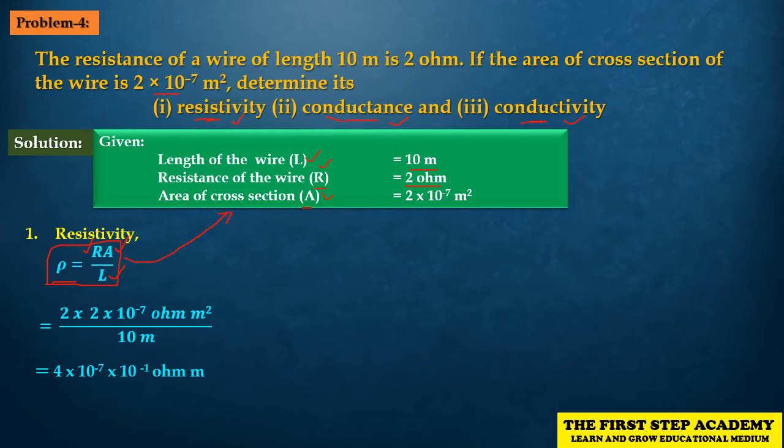Substituting into the resistivity formula: rho = R × A / L = 2 Ohm × (2×10⁻⁷ metre square) divided by 10 metre.